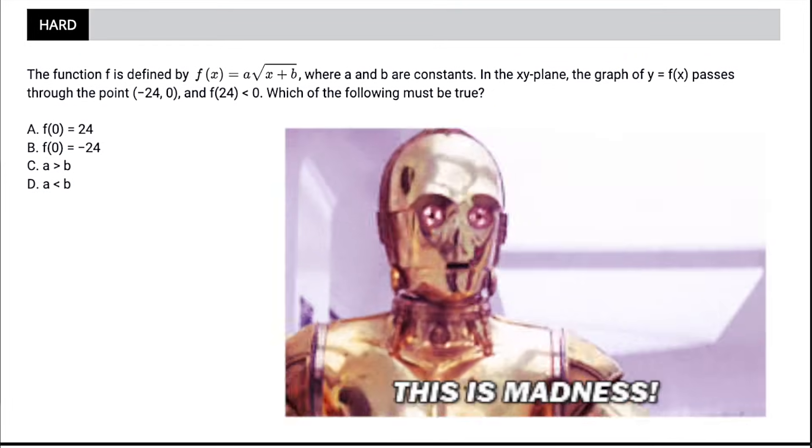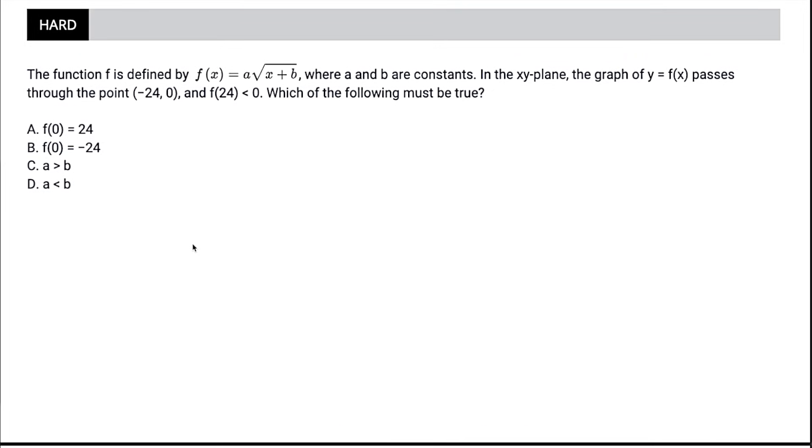Pause the video. Try this madness on your own first. But here we go. This is all about plugging stuff in. If you are given a point, plug it in, especially if it's a constants question that has more than one constant and you're being asked which of the following must be true. This is clearly not going to be something we want to use Desmos for because we're speculating. We're not even talking about an actual value. So plugging stuff in is going to be our best friend here. Let's plug our point in, 0, negative 24. So instead of f of x, we have 0. a times the square root of, instead of x plus b, it's negative 24 plus b. And let's just sit with this for a second. What does this tell us already?